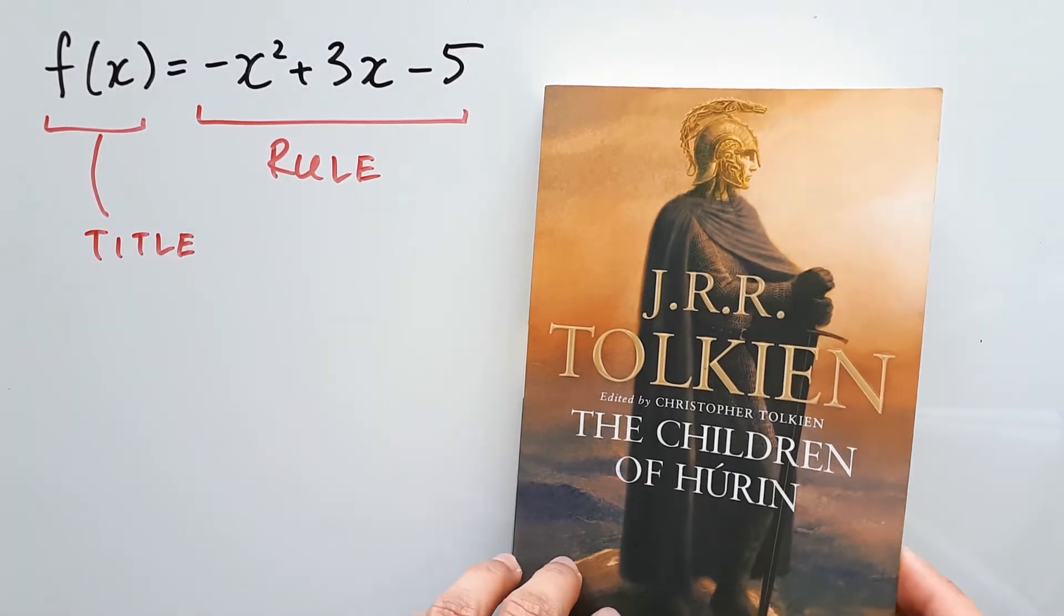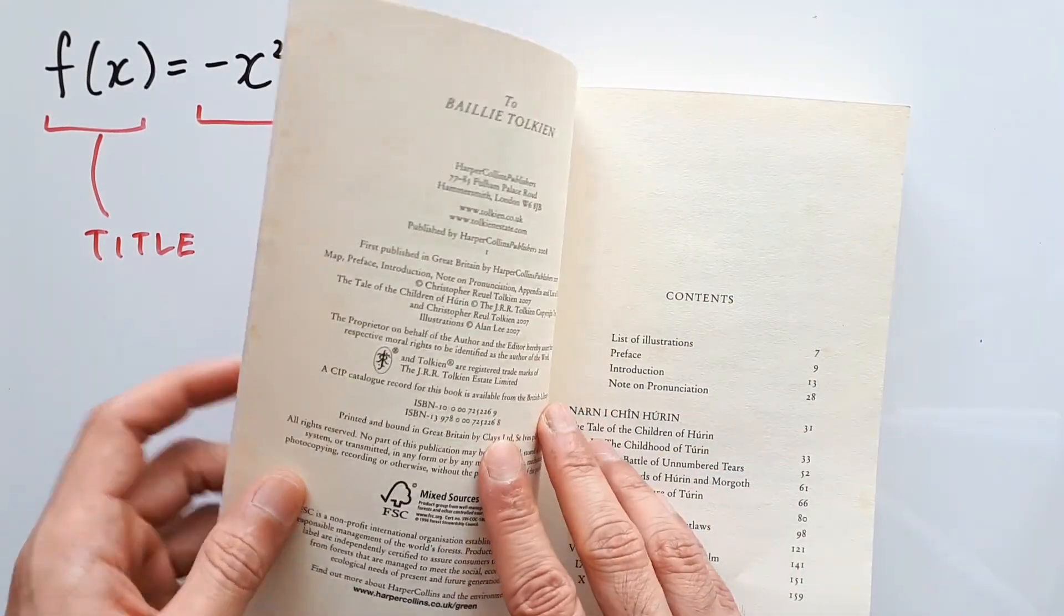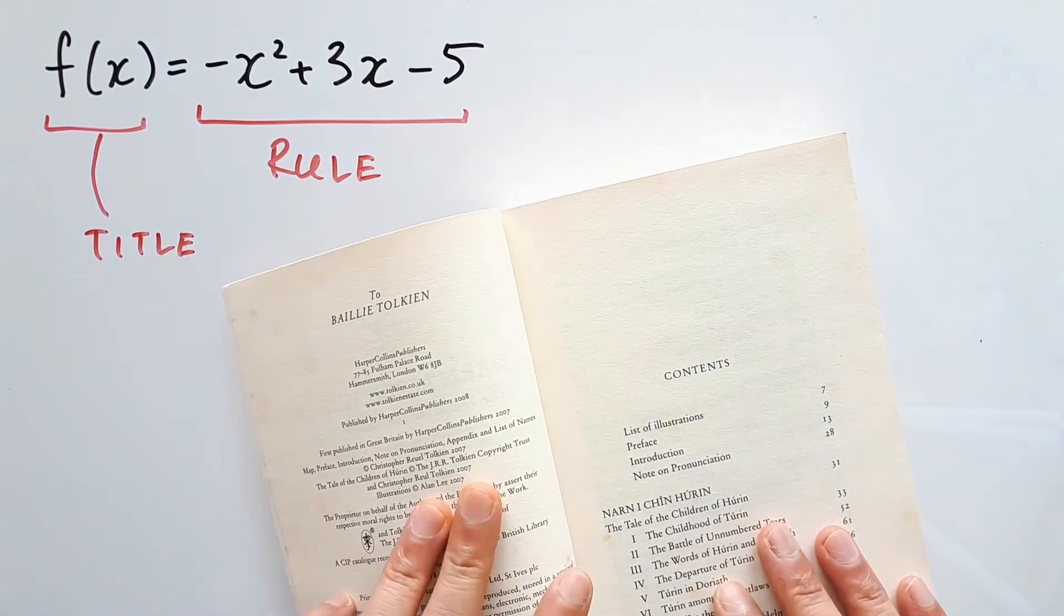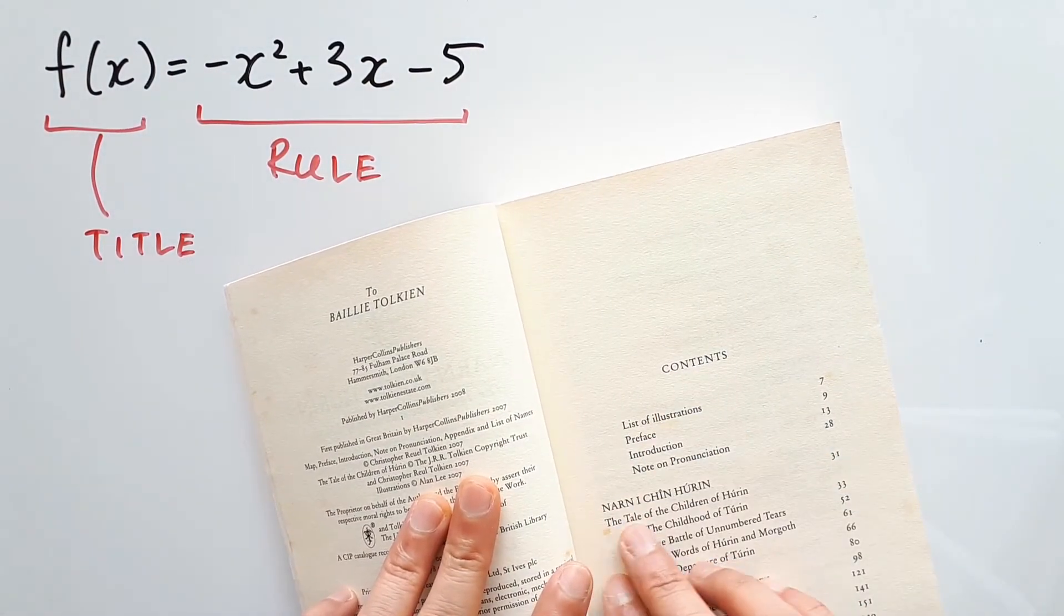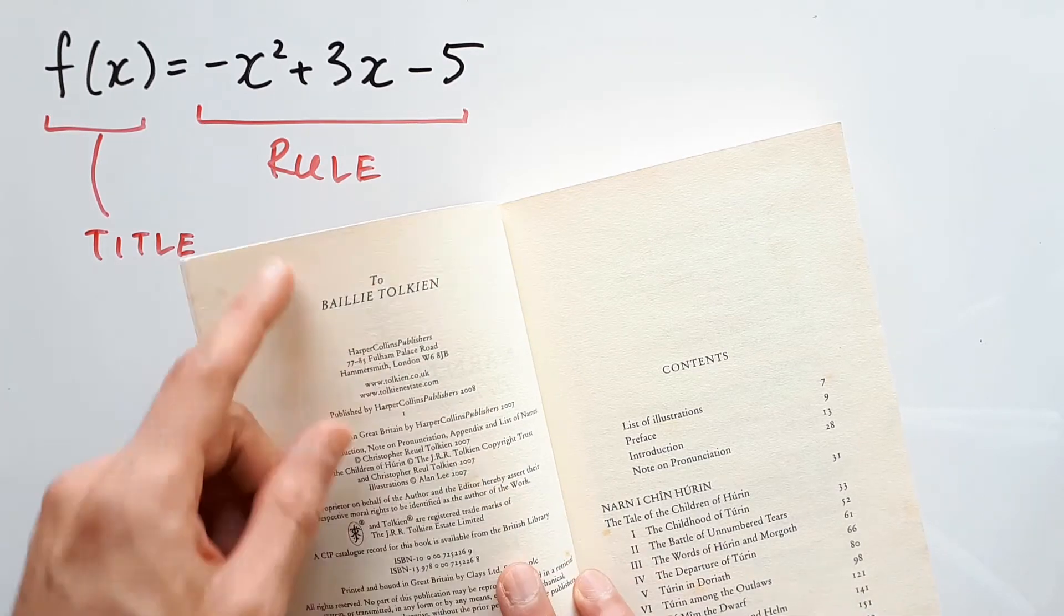Instead of just trying to explain to you every single word in the book itself or every single chapter, I can just refer to it as the title. Now if you go to the table of contents, this tells you where to find each specific chapter. In a sense, you could think of this as a rule.